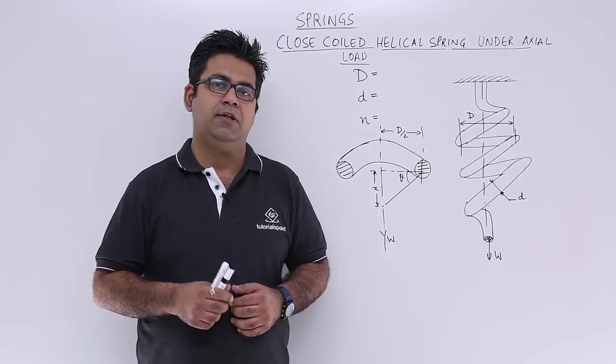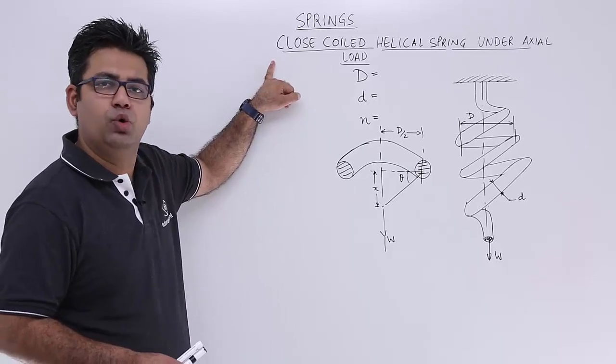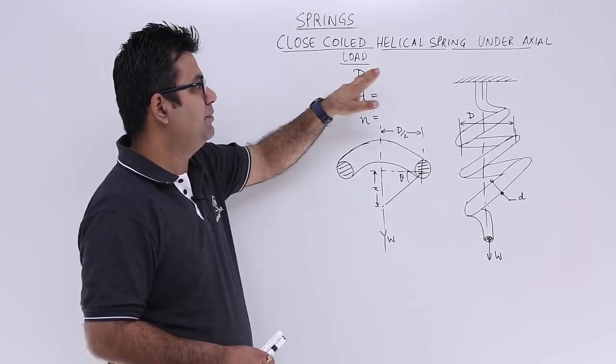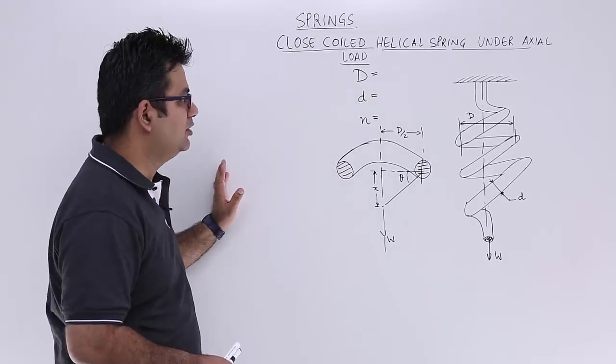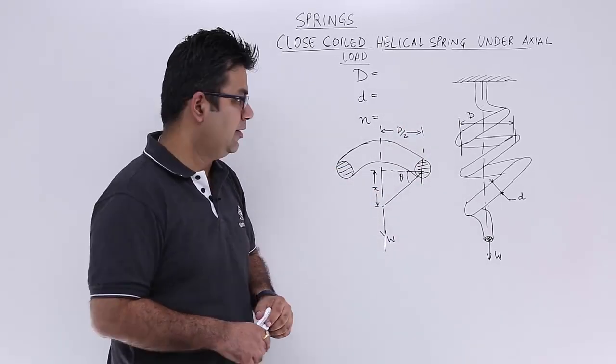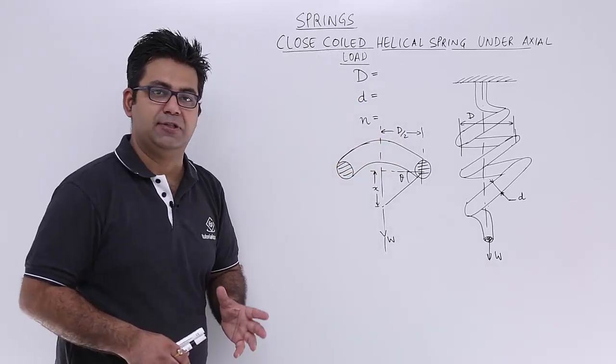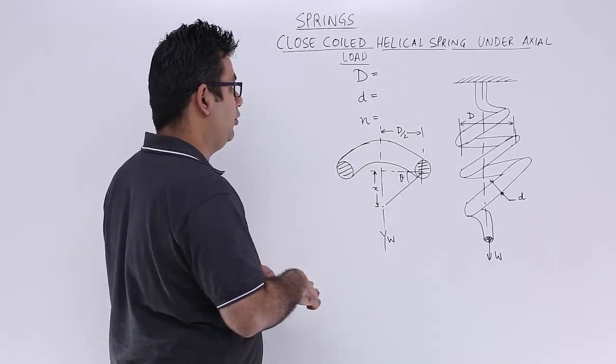Now let's begin the chapter on springs and we'll start by understanding the closed coil helical spring under axial load. This is how a closed coil helical spring looks like and it is acted upon by an axial load. There are three terms to it, very important.